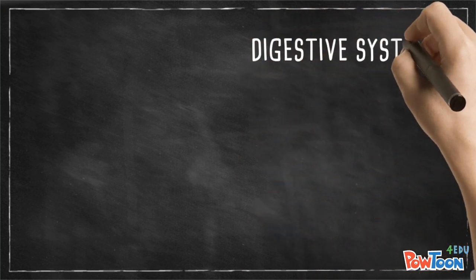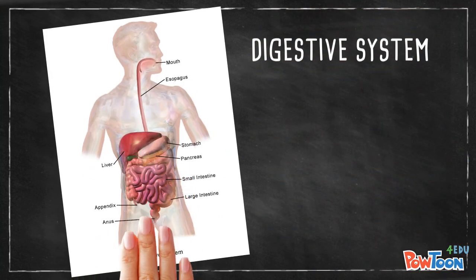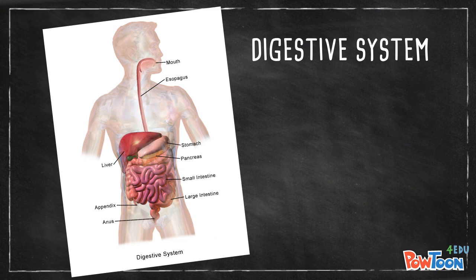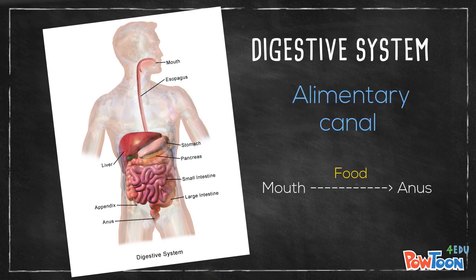Let's first take a look at the organs involved, known as the digestive system, starting from the mouth to the esophagus, stomach, liver, pancreas, small intestine, and the large intestine, ending at the anus. The organs are interconnected for the food to pass along, known as the alimentary canal.